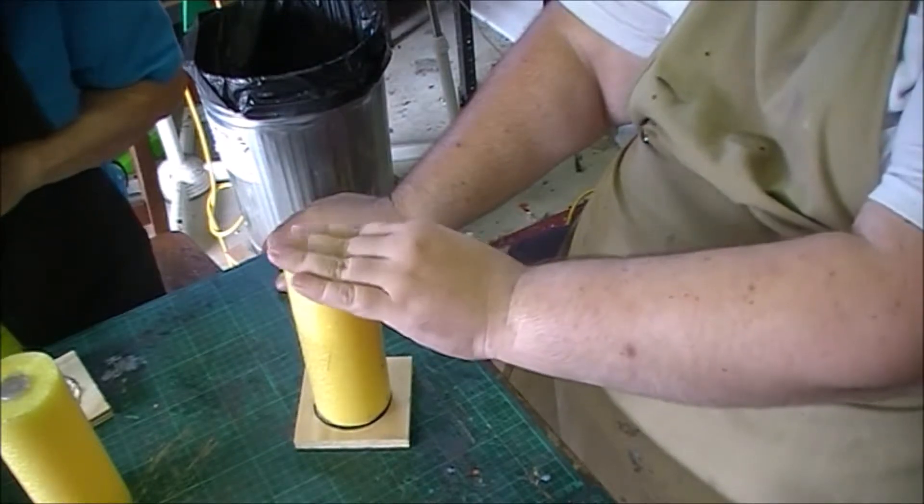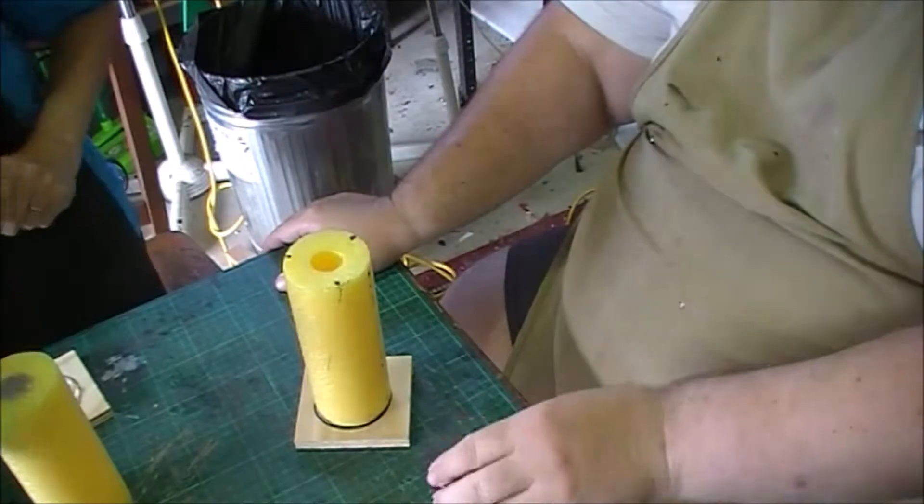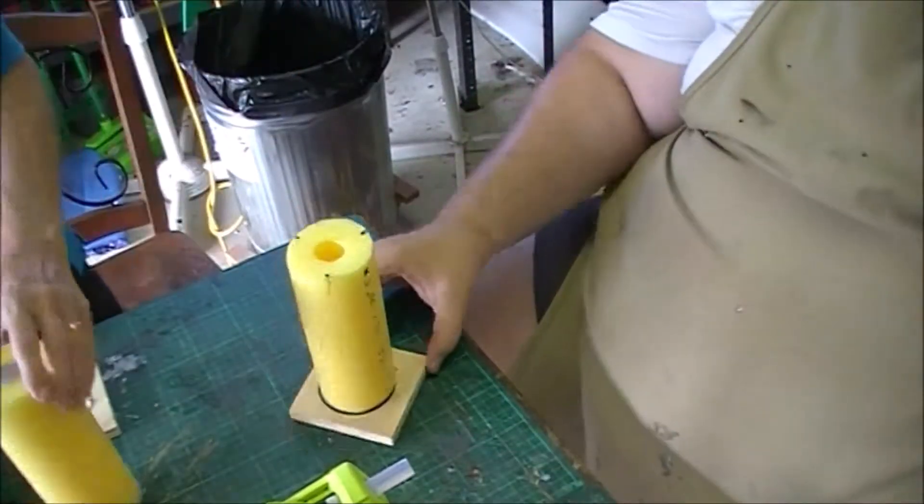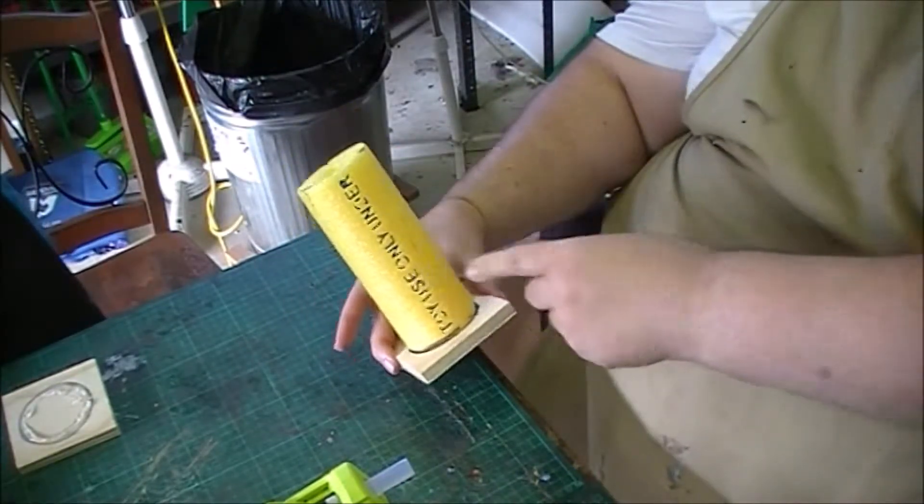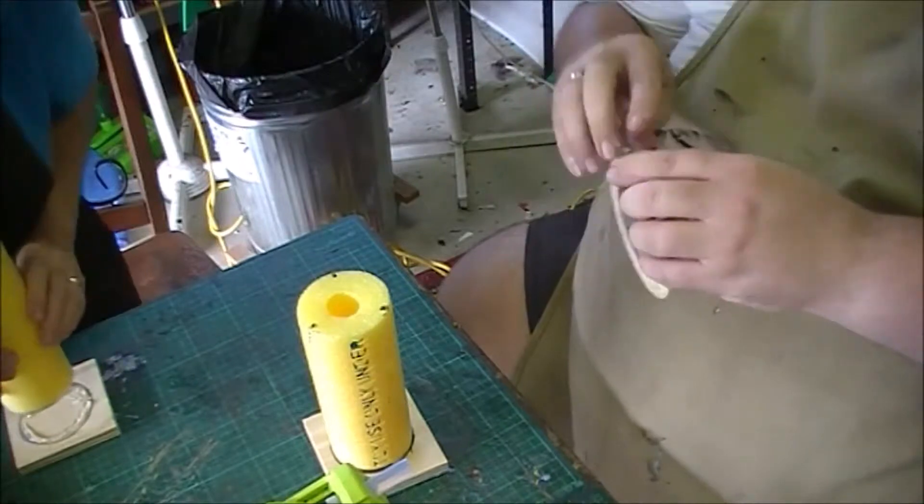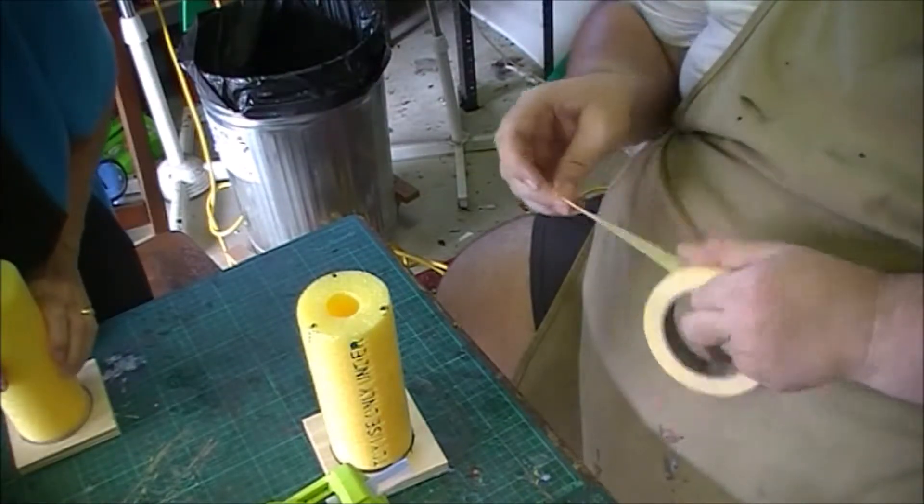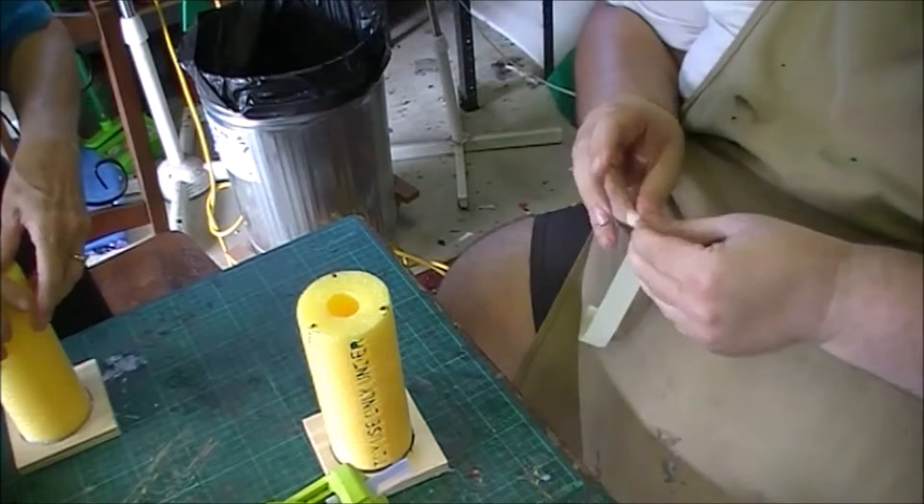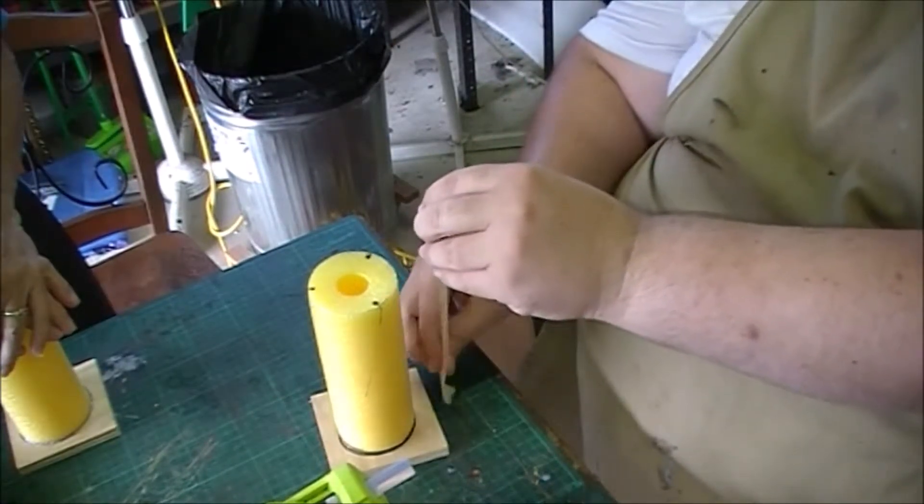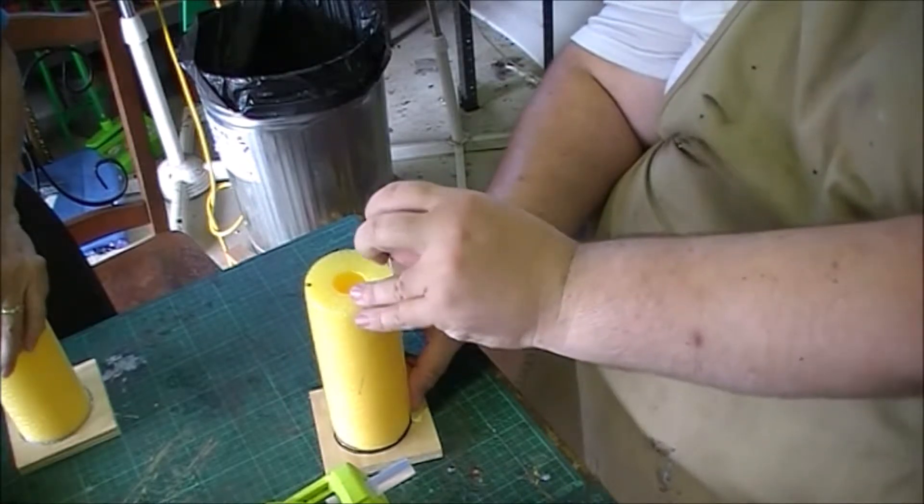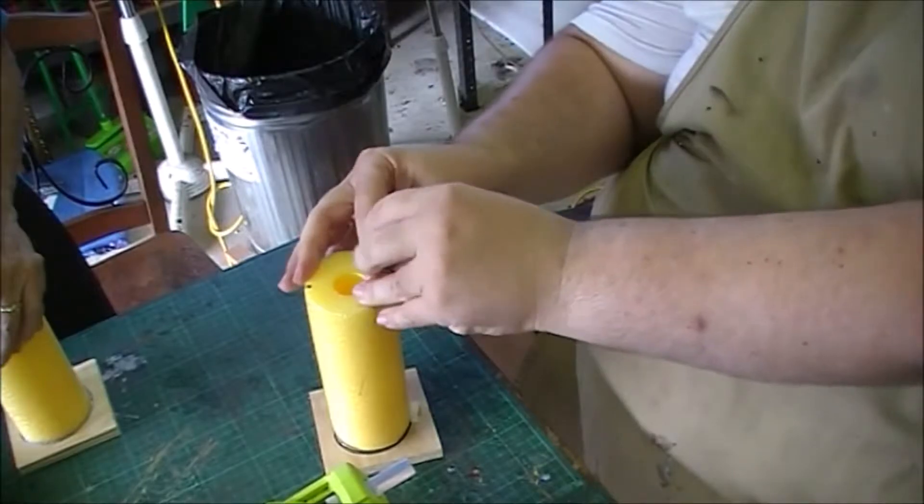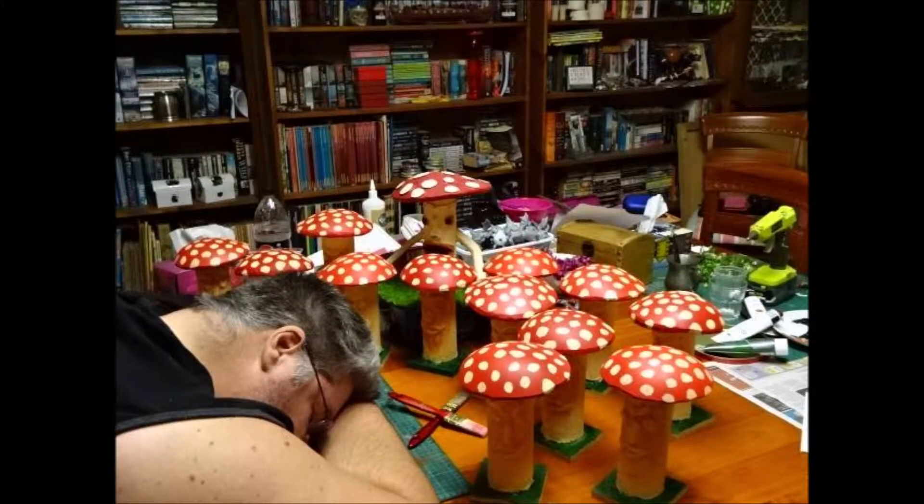Now, if your pool noodle has words down the side of it, I'm going to strongly suggest putting just a strip of masking tape over it before you go any further, just so it doesn't show through. Because that's the last thing any of us need is to find out that our mushrooms are not toys. I think my mushrooms are toys. I might have mushrooms on the brain.